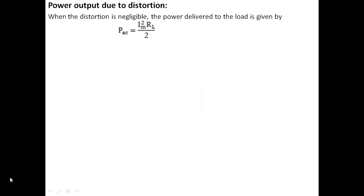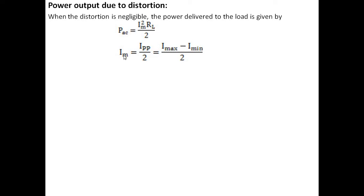Let us start our discussion with power output due to distortion. We know the basic formula for the power delivered to the load: PAC is equal to Im² into RL divided by 2, where RL is the load resistance and Im is the maximum or peak current produced across the load.